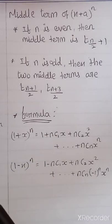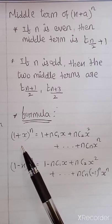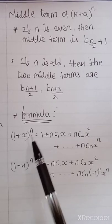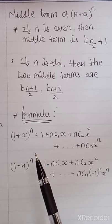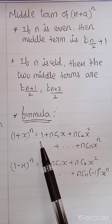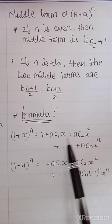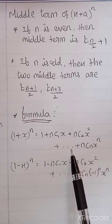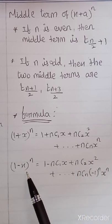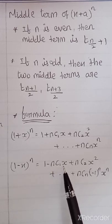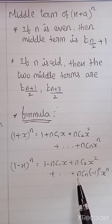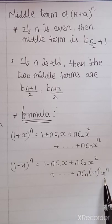There are two more formulas. In the binomial theorem formula X plus A power N, if we substitute A equal to 1, we get 1 plus X power N equals 1 plus NC1·X plus NC2·X² and so on up to NCN·X^N. And 1 minus X power N equals 1 minus NC1·X plus NC2·X² and so on up to (-1)^N NCN·X^N, with alternating signs.